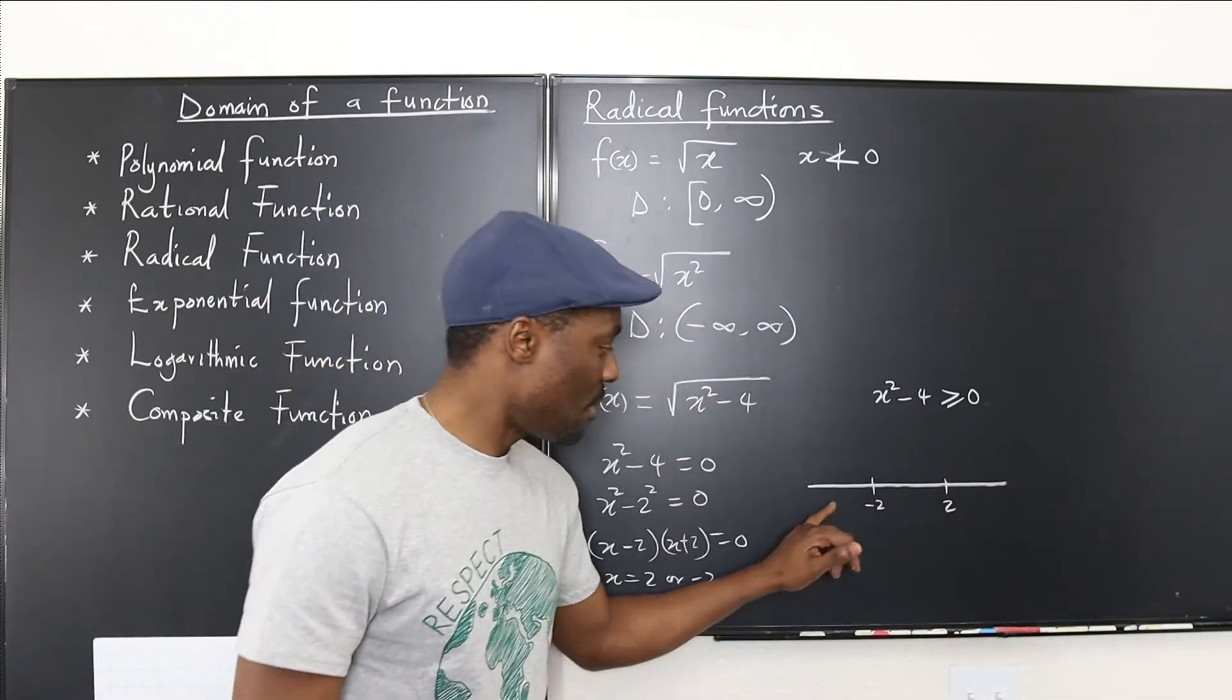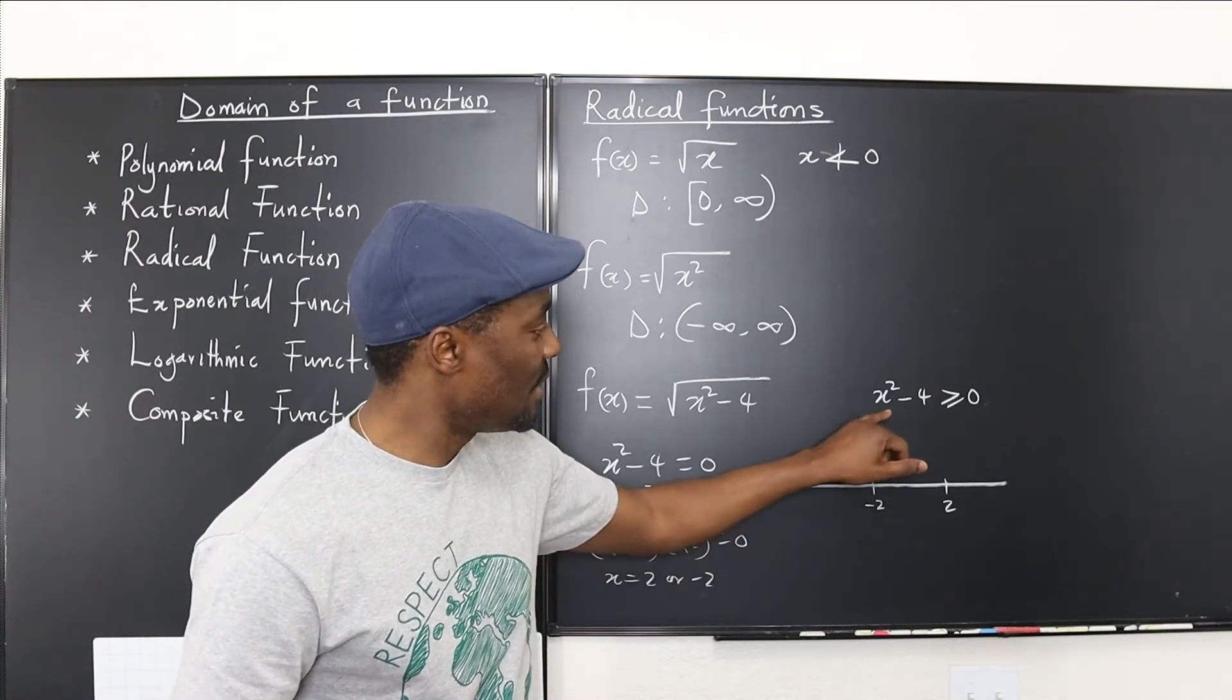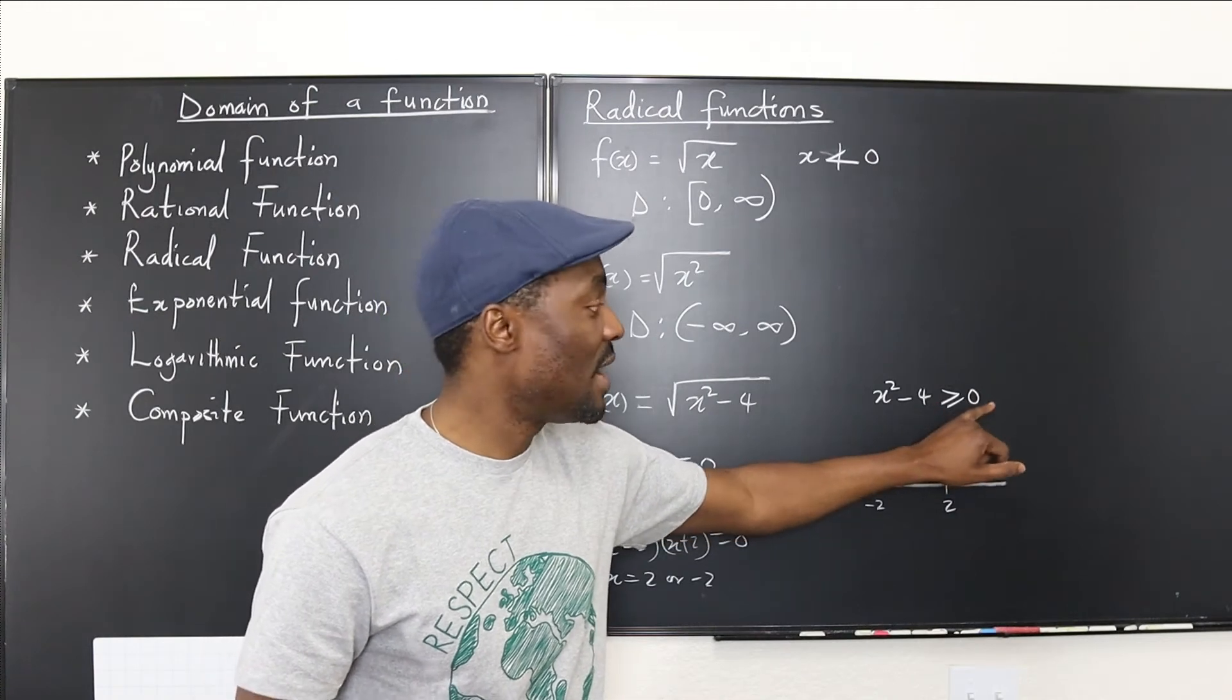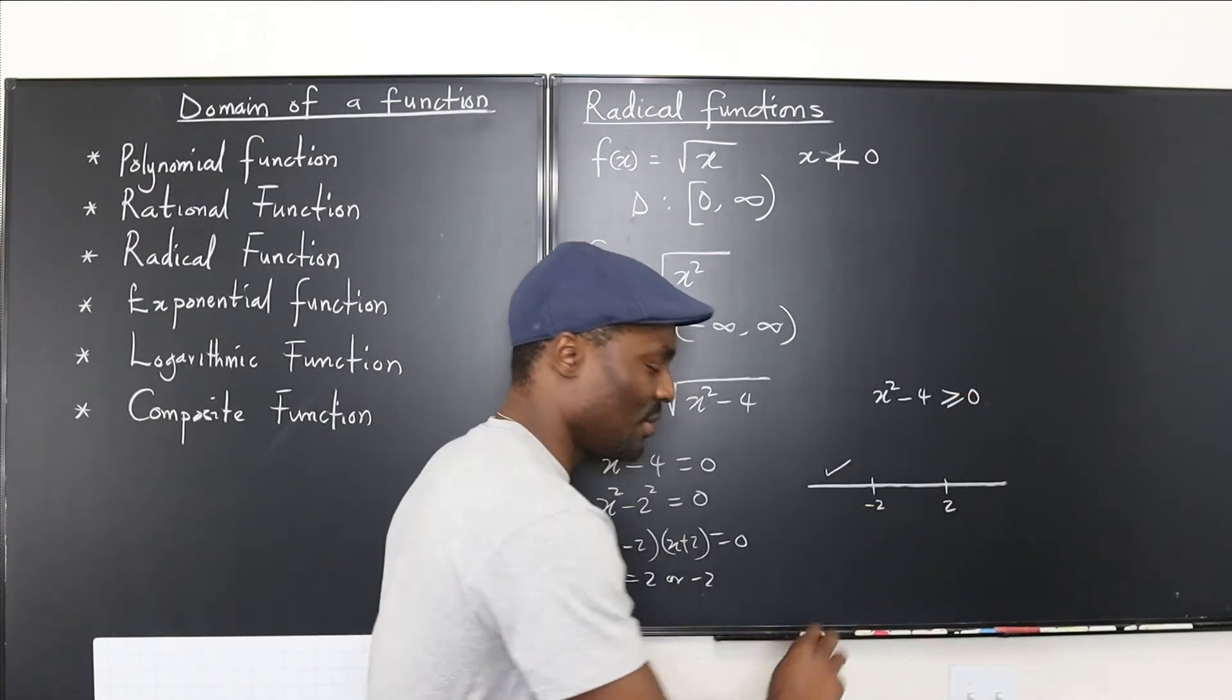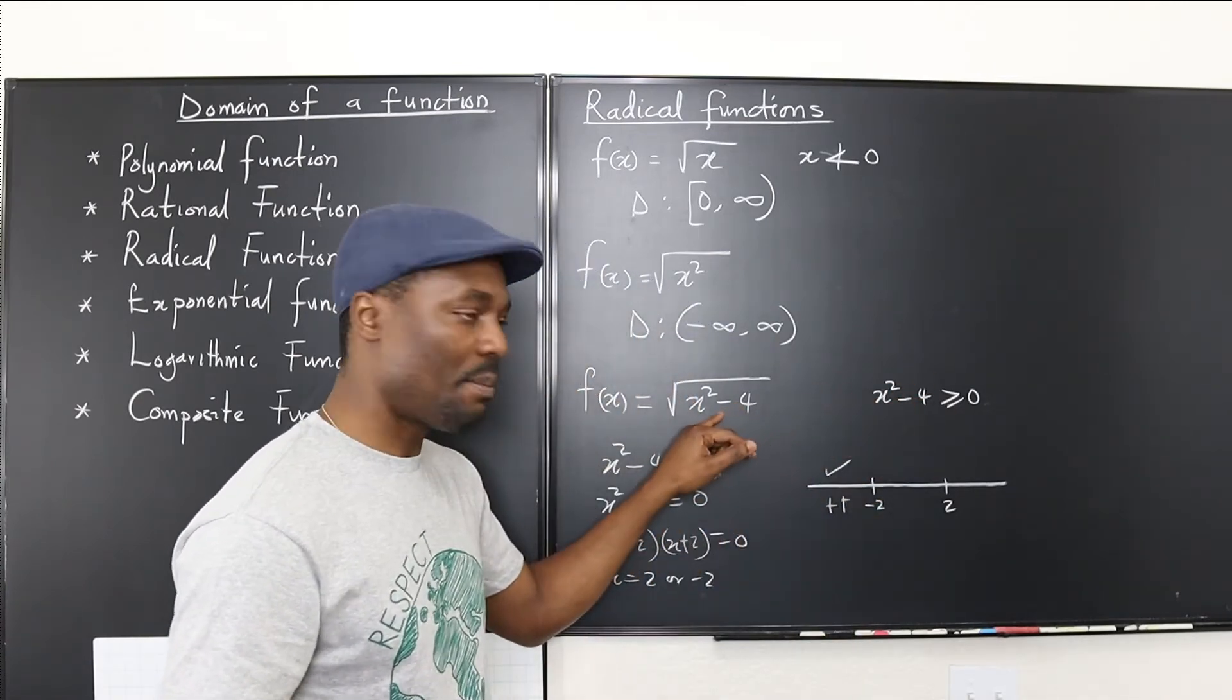So let's pick a number. I'm going to pick a number that is less than negative 2. So let's say negative 3. If I put negative 3 here, it's going to be 9, 9 minus 4 is 5, 5 is greater than or equal to zero. So that's a good number. It means I can accept whatever number is on this side because it's all positive here when I plug it in here. I put negative 3 here.